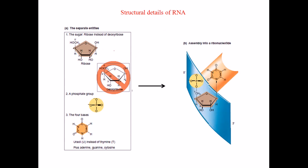Looking at the structural details of RNA, we have the sugar, which is a ribose sugar, not deoxyribose. At the two carbon position, we have a hydroxyl group instead of hydrogen, which we find in DNA.